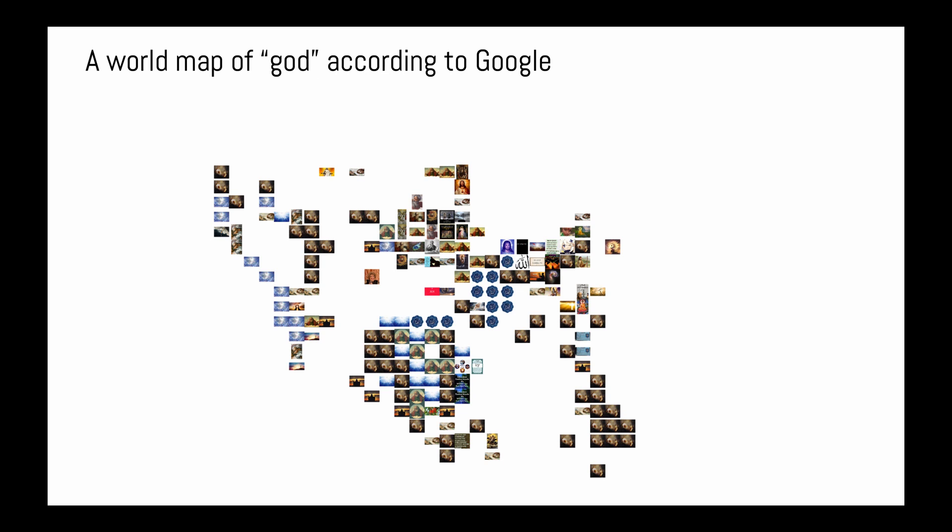These are the top image results for translations of God in the default languages of most Google-supported countries. To determine the default languages, we scrape the google.com homepage with each possible country parameter and detect the language parameters set as the default for each. It's important to note that Google tends to select state-sanctioned and colonial languages as the default for a country.